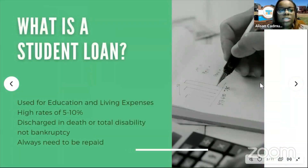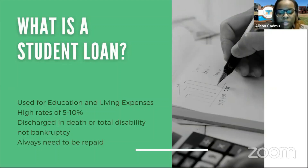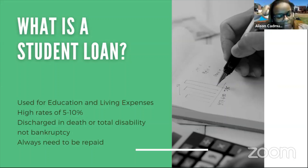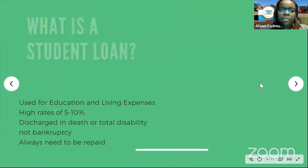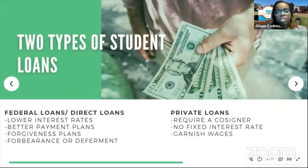So what is a student loan? A student loan is intended to be used for education and living expenses. Student loans have high interest rates of five to ten percent. They are only discharged in the event of death or total disability — not bankruptcy. Unlike scholarships, they will always need to be repaid.